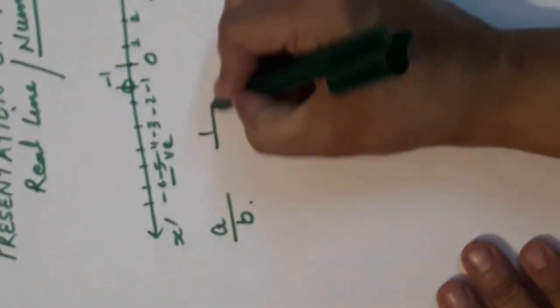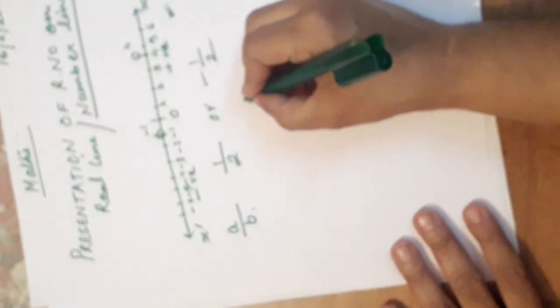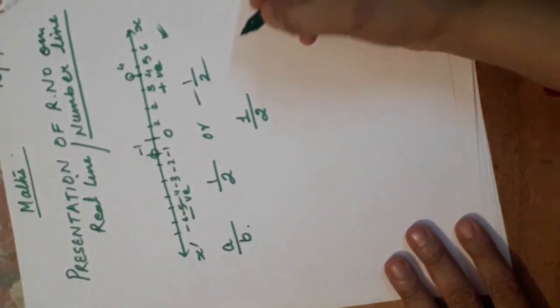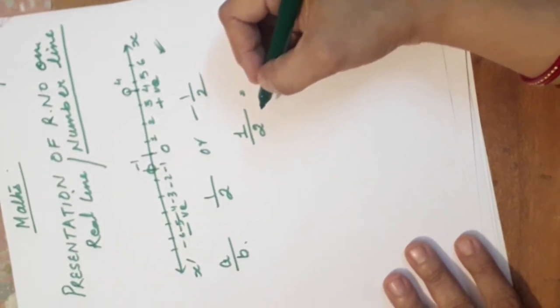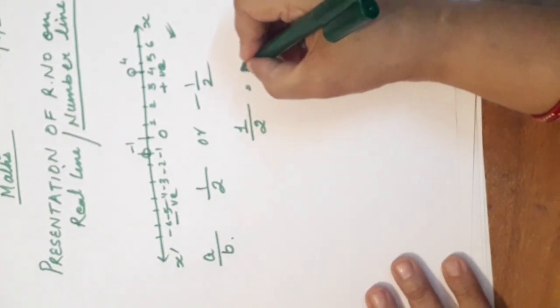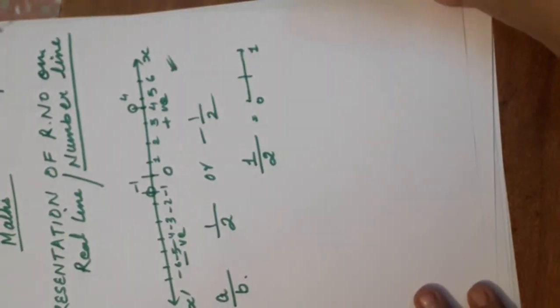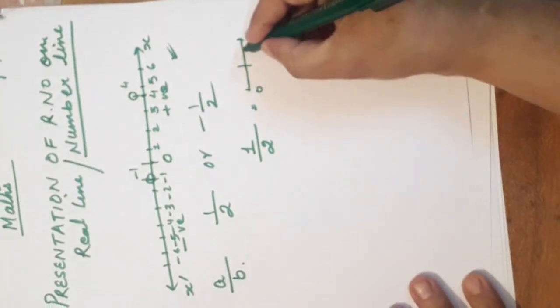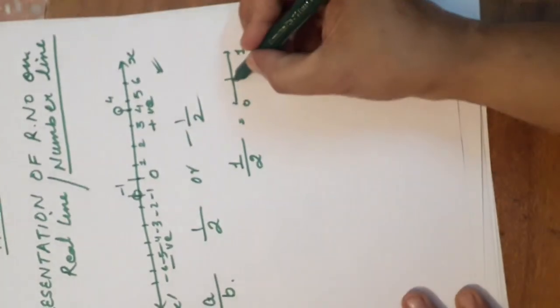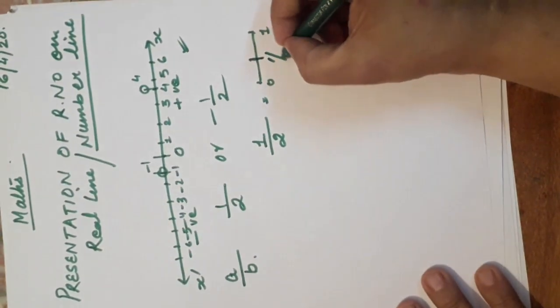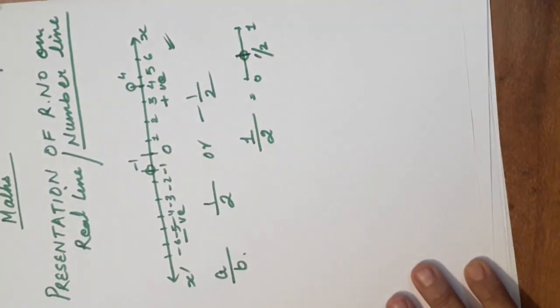Represent 1 by 2 and minus 1 by 2 on the number line. 1 by 2 or minus 1 by 2. We have to represent these two numbers. 1 by 2. 1 by 2 means half. What is 1 by 2? Half. We will divide a number which is from 0 to 1 in two equal parts. If I will draw a line over here. 0 to 1 is divided into two parts. One part is this one and the other part is this one. And I have to highlight its first fraction. Only one is there. So this one is the first one. Means this is 1 by 2.